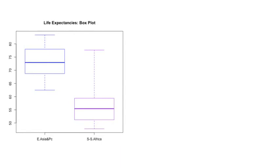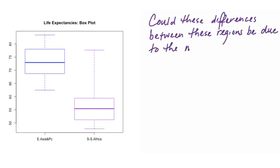Several lectures ago, we looked at these box plots, which summarize life expectancies in two regions of the world. The box plots show that life expectancies in almost all countries in East Asia and the Pacific region are higher than life expectancies in almost every country in Sub-Saharan Africa. Could this be by chance? Could it happen just because of the natural variability that there is in the measurements of life expectancy from country to country?